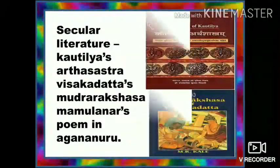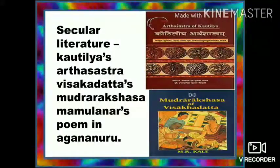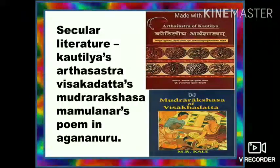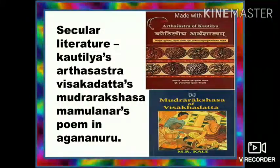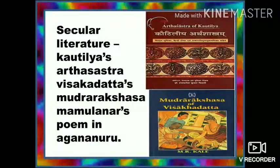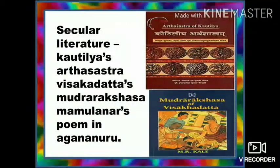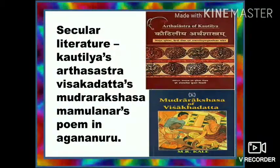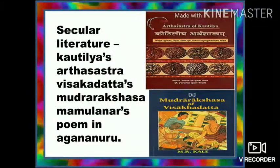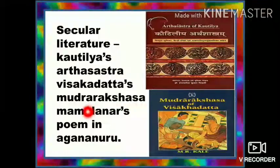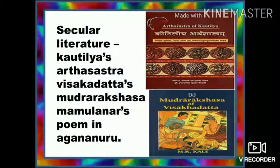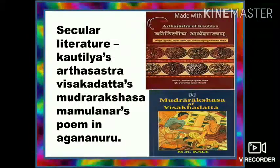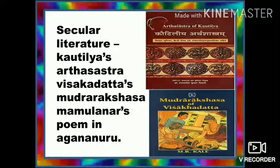Under secular literature, we have Kautilya's Arthasastra, Vishagadatta's Mudra Rakshasa, and Mamulanar's poem in Agananuru. Arthasastra is a book written by Kautilya on polity and governance. It reveals the economic and political condition of the Mauryan period. Kautilya was the prime minister and founder of Mauryan dynasty. Mudra Rakshasa was written by Vishagadatta in the Gupta period. The book gives an account of how Chandragupta Maurya defeated the Nandas with help from Chanakya.